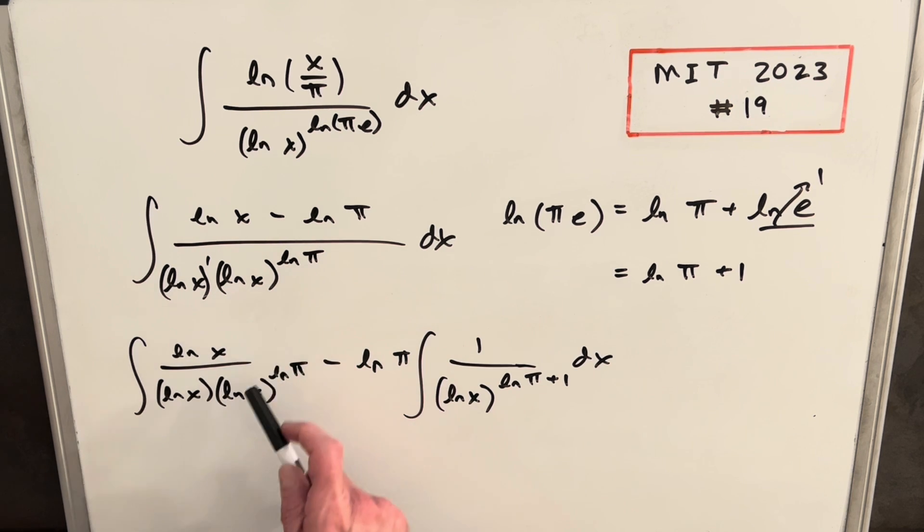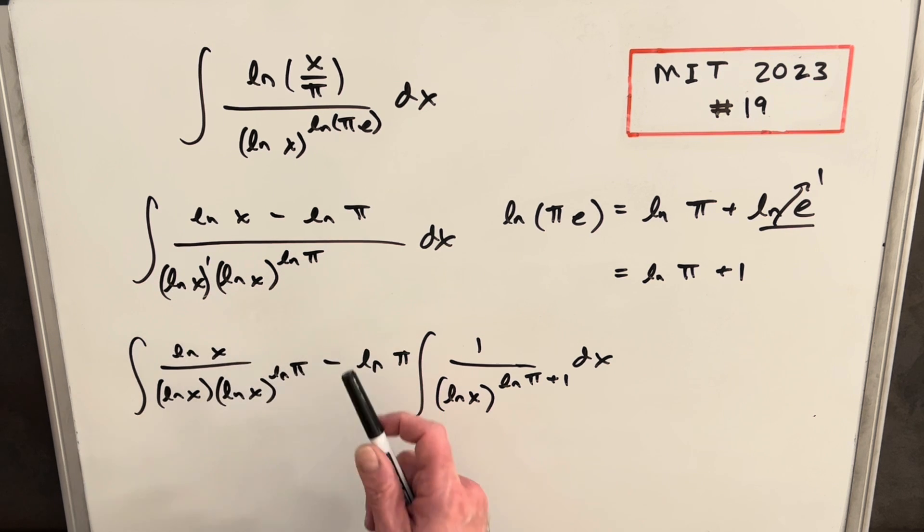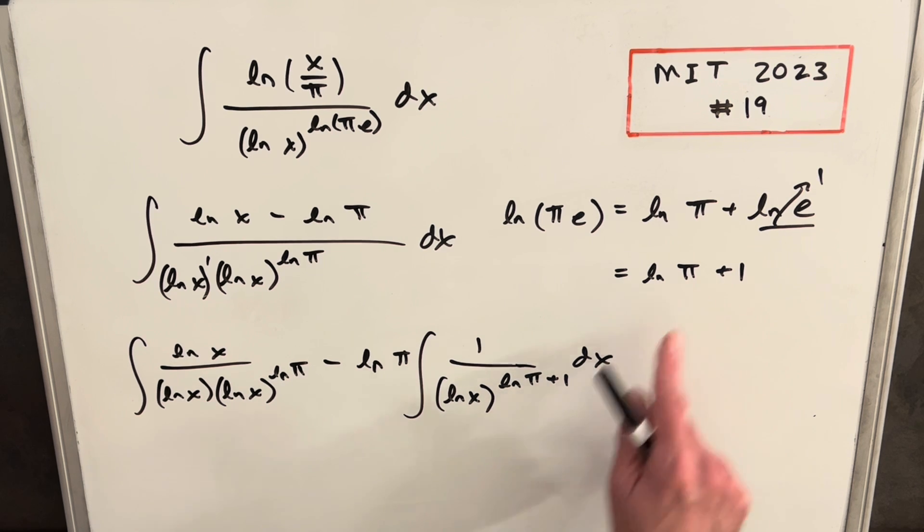When I split this, I left the first integral exactly how we see it up here, ln x over this whole thing. But then for the second one, splitting the ln π integral, I brought the ln π up front. This is a constant. I can pull that in front of the integral. And then here, I wrote my exponent back in the form that we had it here, ln π plus one. It's just going to be more convenient for me later.